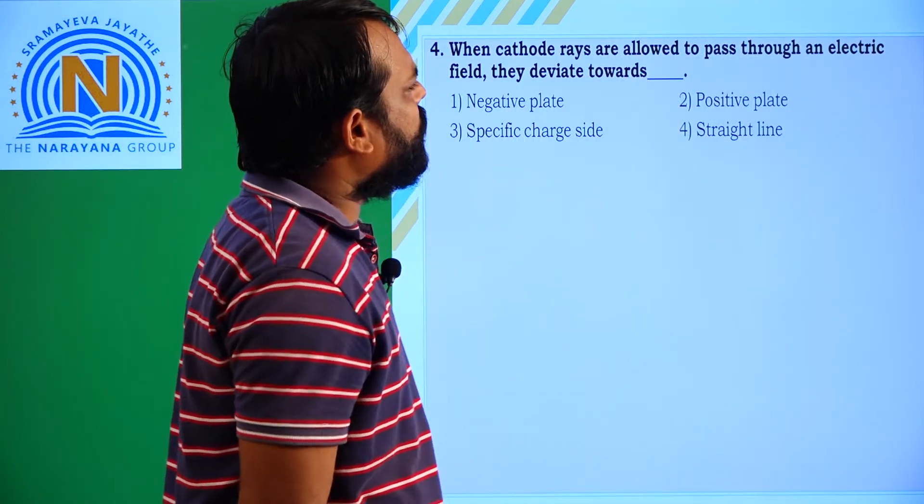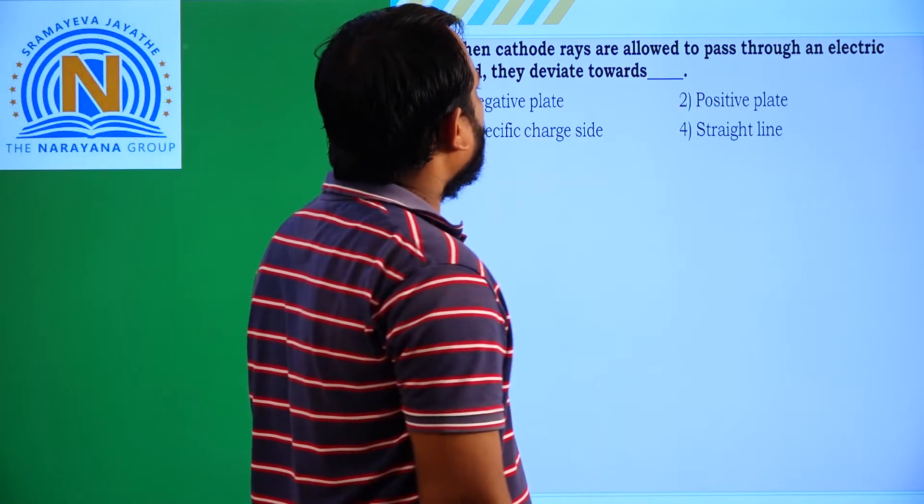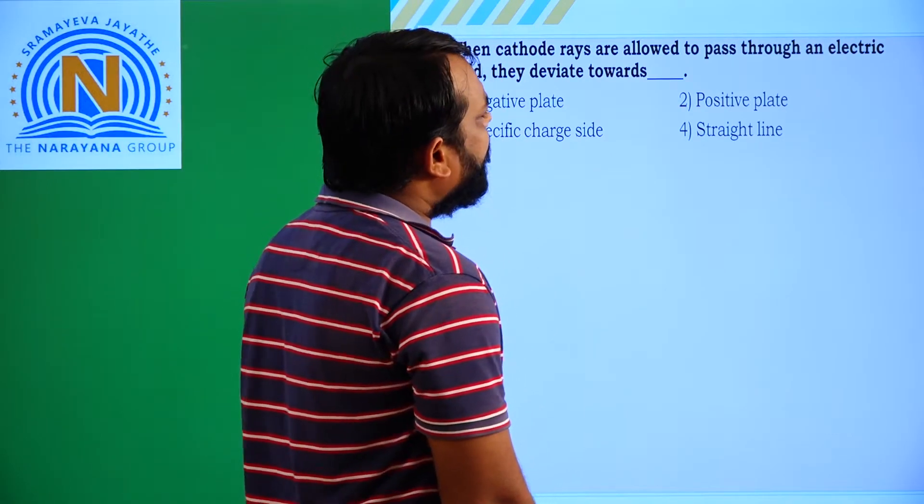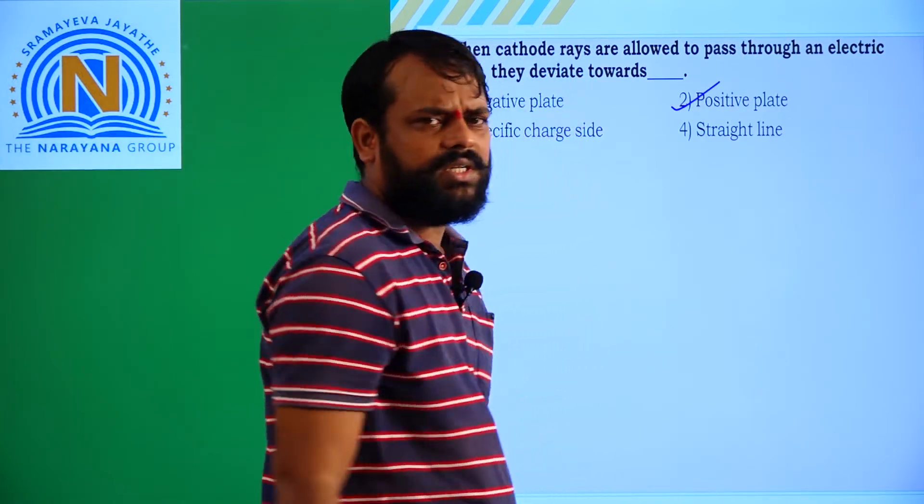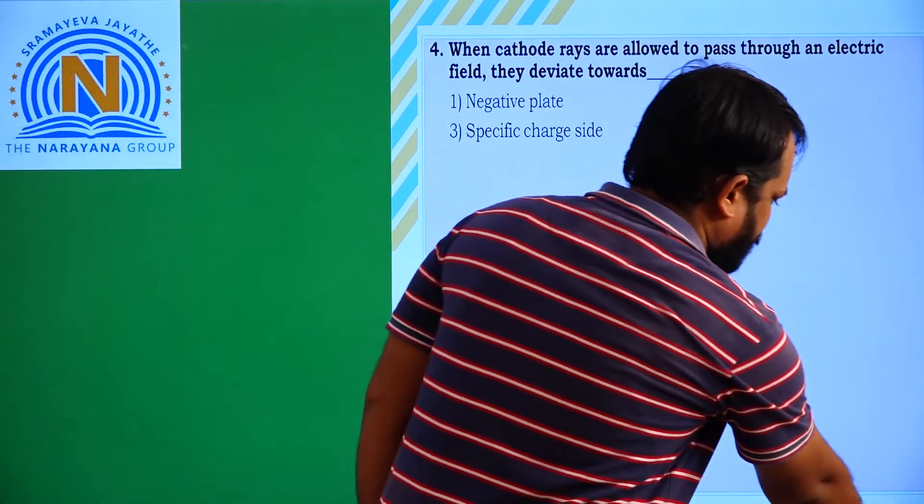When cathode rays are allowed to pass through an electric field, they deviate towards a positive plate. And next, we will move to next question.